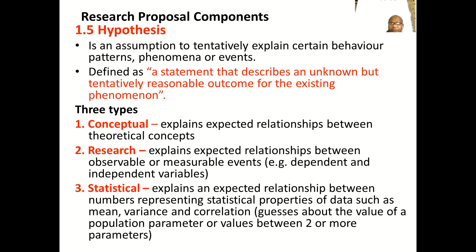The hypothesis, section 1.5, is an assumption that tentatively explains certain patterns in a phenomenon or event. It defines a statement describing an unknown but tentatively reasonable outcome for existing phenomena. There are three types of hypothesis: conceptual hypothesis, research hypothesis, and statistical hypothesis. A conceptual hypothesis explains the expected relationship between two theoretical concepts — for example, in children the height depends on age, which is a conceptual relationship.